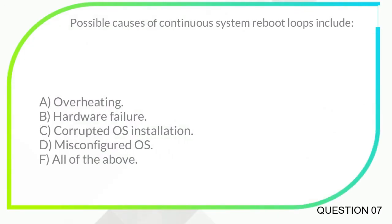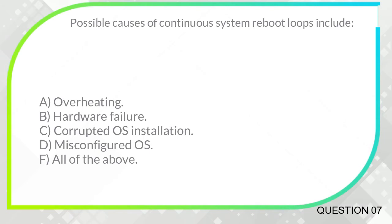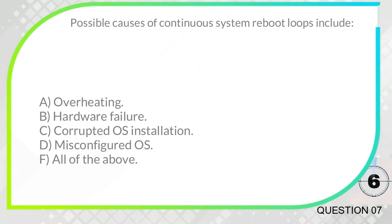Possible causes of continuous system reboot loops include: A. Overheating. B. Hardware failure. C. Corrupted OS installation. D. Misconfigured OS. F. All of the above. The correct answer is F. All of the above.